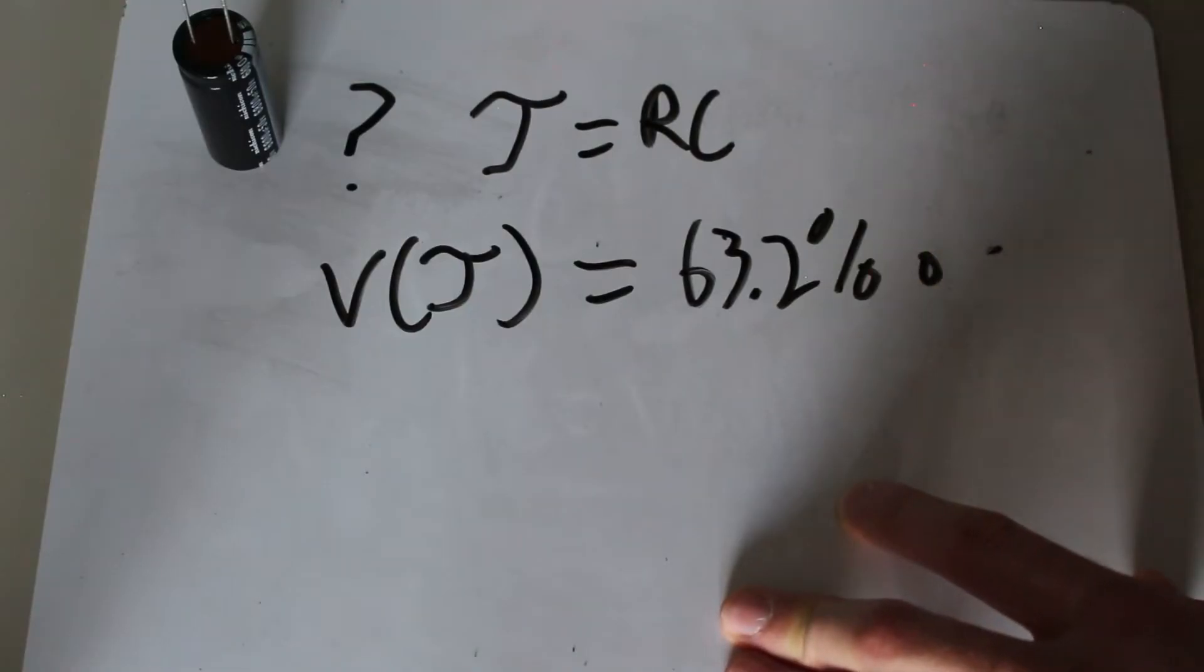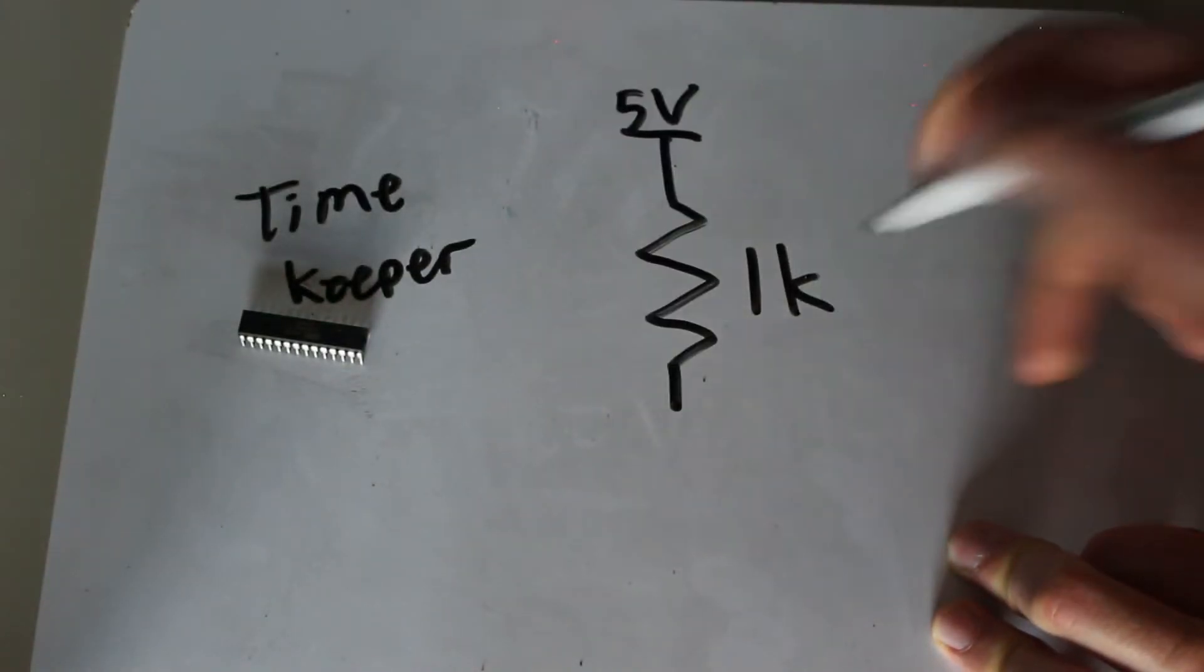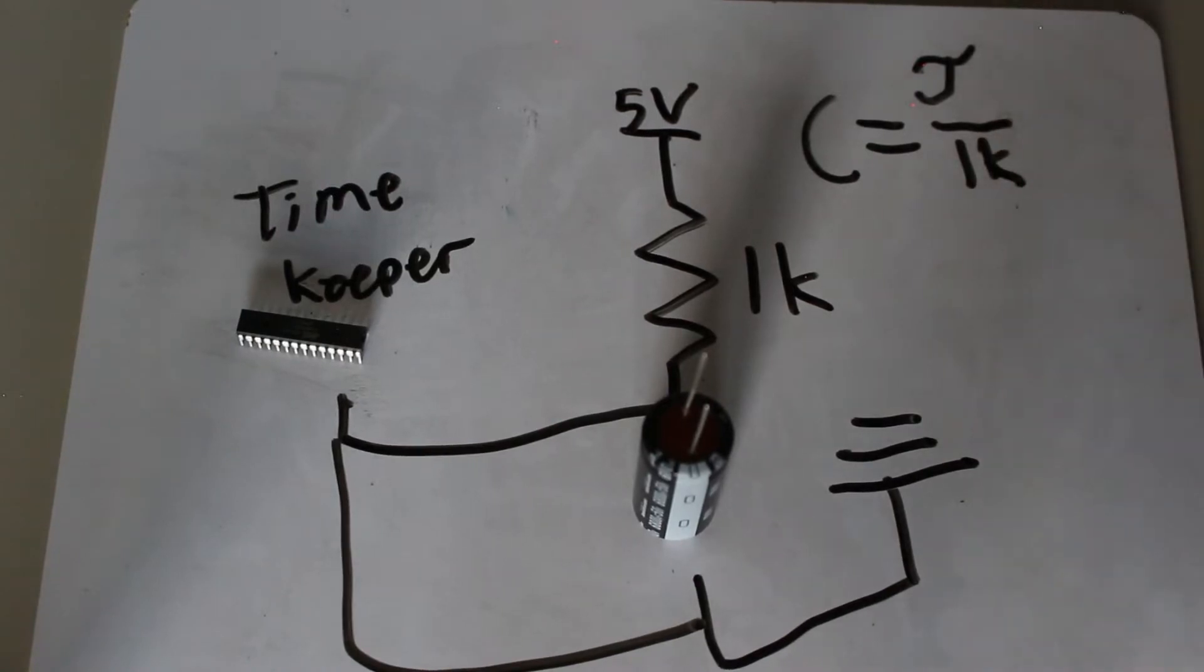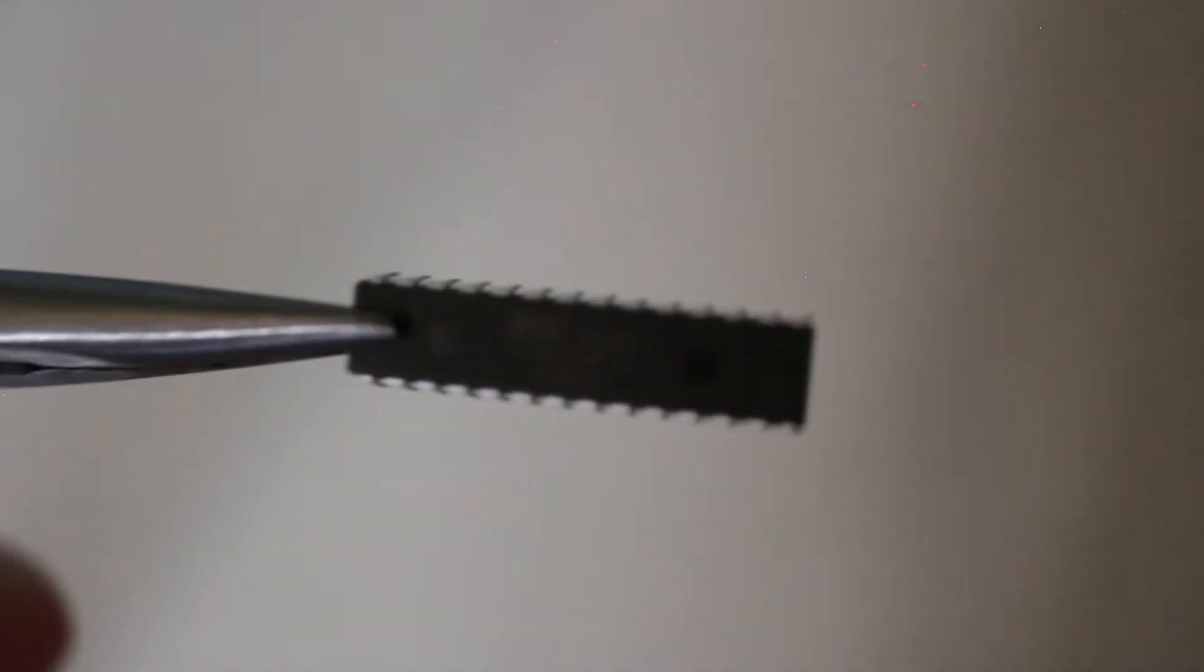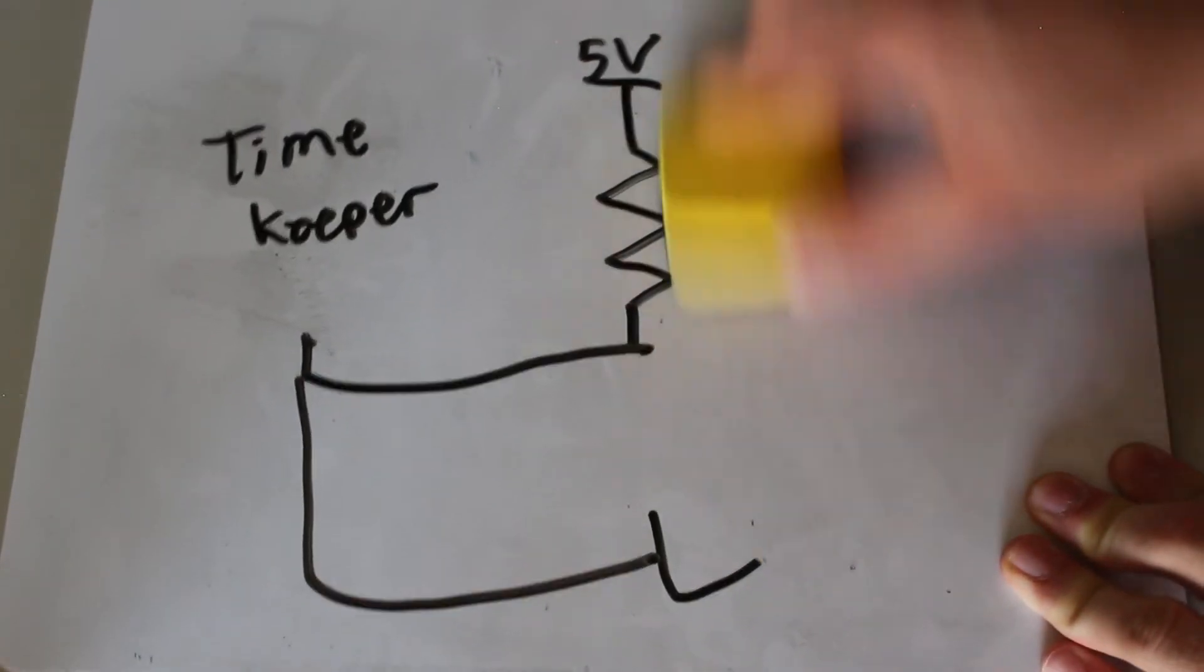And the time constant is the time it takes for the capacitor to reach 63.2% of its input voltage. So let's say that we get a microcontroller to measure just how long the constant is through a 1k resistor. We can divide that constant by the resistance to find the capacitance. And this Atmega 8A microcontroller can do all the timing and math for us to find out any capacitance.